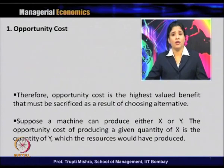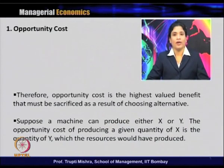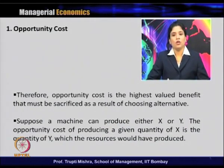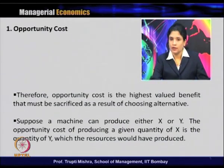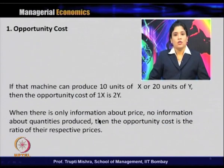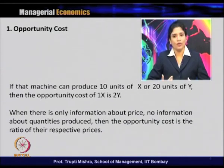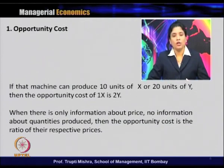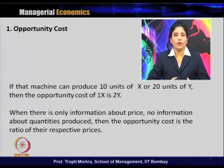If the machine can produce either 10 units of X or 20 units of Y with the available resources, the opportunity cost of producing 1 unit of X is 2 units of Y. Similarly, the opportunity cost of producing 1 unit of Y is 0.5 units of X.